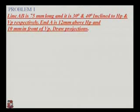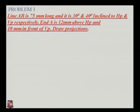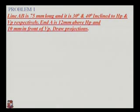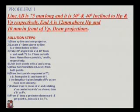Now we will consider some problems on the projection of the line. The first problem: line AB is 75 mm long, inclined at 30 degrees and 40 degrees with the horizontal plane and vertical plane respectively. End A is 12 mm above HP and 10 mm in front of VP. We have to draw the projection of the line AB.